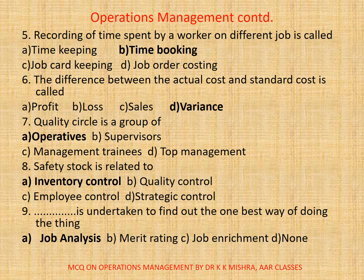9. Dash is undertaken to find the one best way of doing a thing. A. Job analysis. B. Merit rating. C. Job enrichment. D. None. The correct option is A. Job analysis.